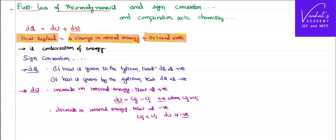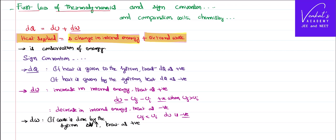Now we have external work done, DW. If work is done by the system — meaning the gas pushes the piston outward — there is an increase in volume, delta V increases. Treat that work done as positive. If work is done on the system, meaning you are compressing it by pushing the piston down, treat that work as negative. In that case, volume decreases. This is the sign convention for DW.